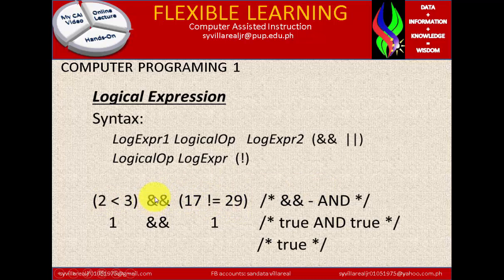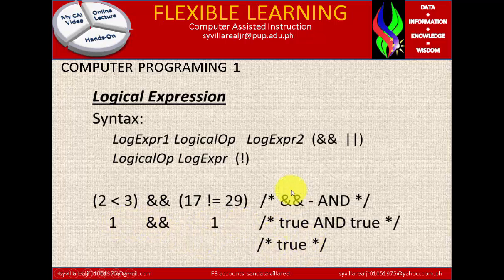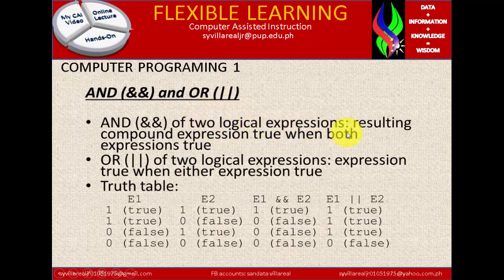You will notice the result is only true or false. If 2 is less than 3, this is true, so we have 1 — because 0 is false and any non-zero number is considered true. So 1 is basically true, and 17 not equal to 29 is also true, so this is 1 also. 1 times 1 is 1, so the answer is true. That is how a complex logical expression works.